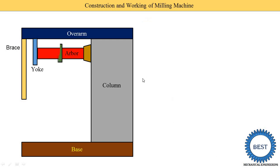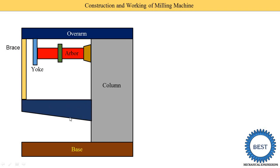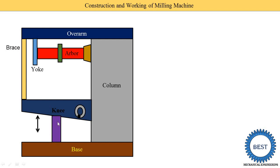The milling cutters cut our workpiece. The next most important component is the knee. The knee is mounted on one face of the column on the dovetail shape, and it moves in the up and down direction by using an elevating screw or screw jack. It can be moved either by a motor or by hand.